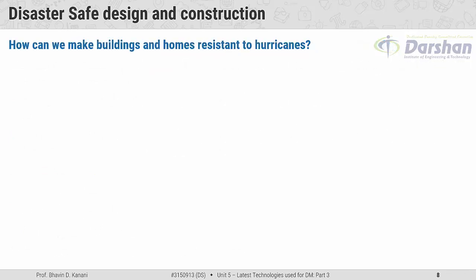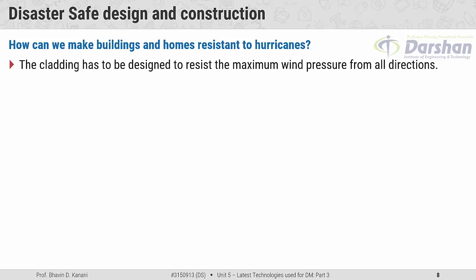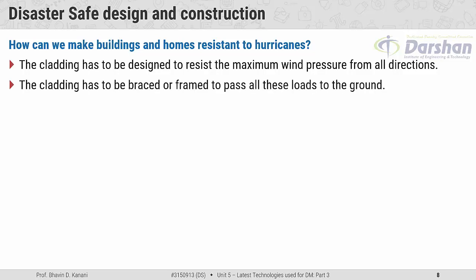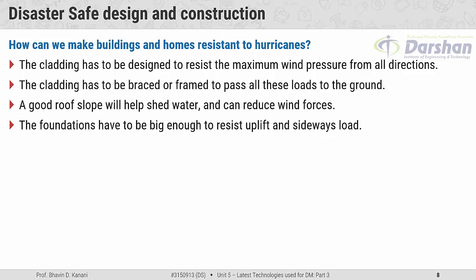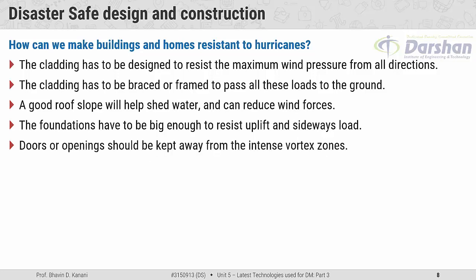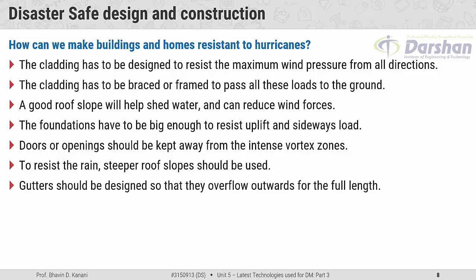How can we make buildings and homes resistant to hurricanes? The cladding has to be designed to resist maximum wind pressure from all directions, and must be braced or framed to pass all these loads to the ground. A good roof slope will help shed water and can reduce wind forces. The foundations have to be big enough to resist uplift and sideways loads. Doors or openings should be kept away from intense vortex zones. To resist rain, steeper roof slopes should be used. Gutters should be designed so that they overflow outwards for the full length.